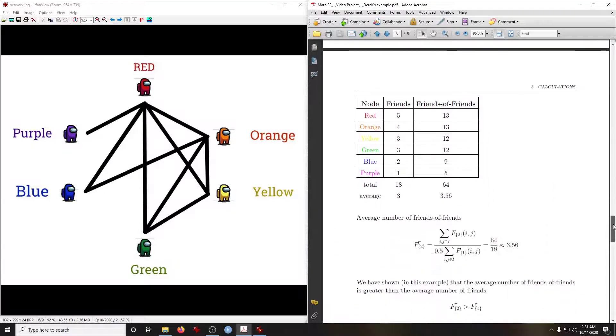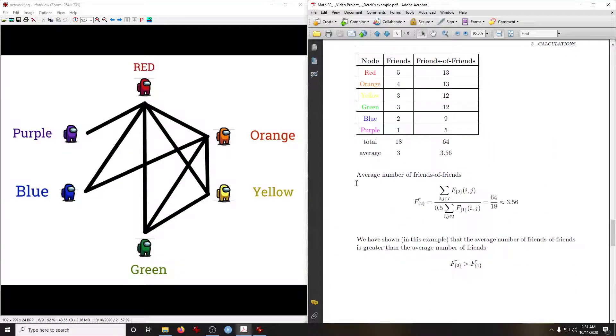If we continue to dive into the network and trace the friends of friends, we would arrive at 64 connections. But this is now averaged over the 18 friends we found in the previous calculation. 64 divided by 18 we get 3.56, and we would arrive there through the network formulations as well.